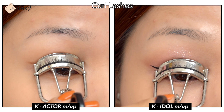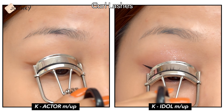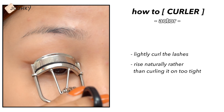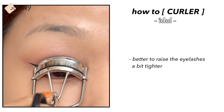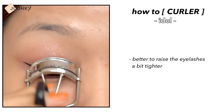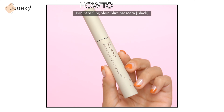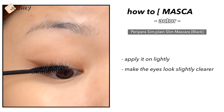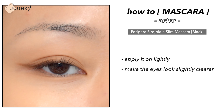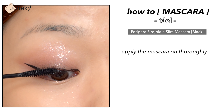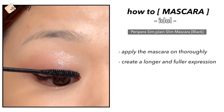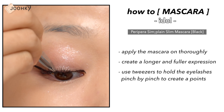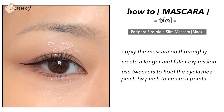I'm going to use a curler on my lashes before applying mascara. For actor makeup, it's better to lightly curl the lashes so they rise naturally rather than curling too tight. For idol makeup, it's better to raise the eyelashes a bit tighter. For the mascara, I'll use Peripera Simple Lane Slim Mascara for both looks. For the actor makeup, I'll apply it lightly to make the eyes look slightly clearer. For idol makeup, I'll apply it thoroughly to create a longer and fuller expression. These days, some people use tweezers to hold the eyelashes pinch by pinch to create definition.